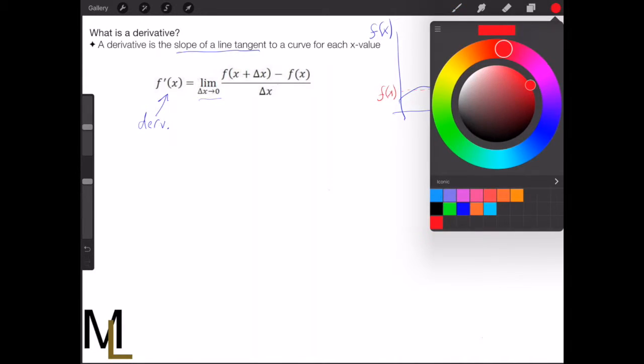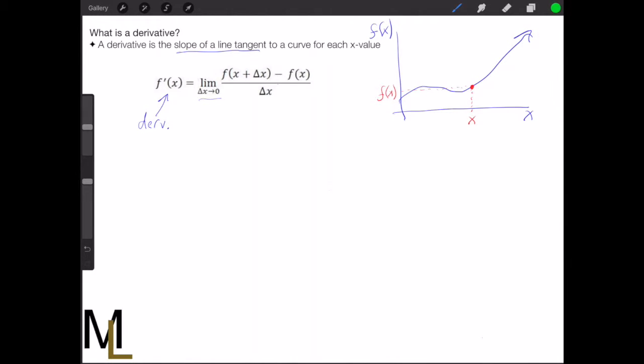Then if we pick a second point along the curve here, it will be considered x plus delta x, so we just add an arbitrary value to it. The corresponding y value will just be f of x plus delta x.